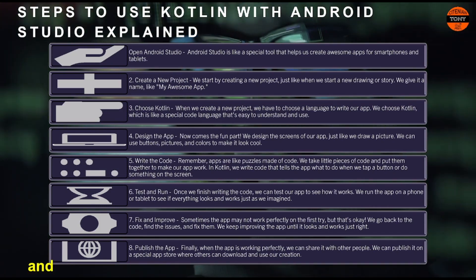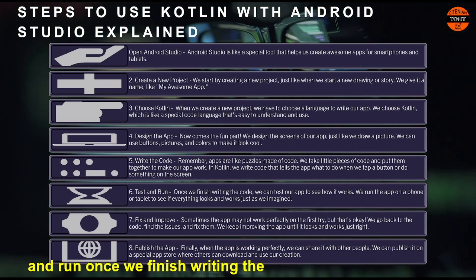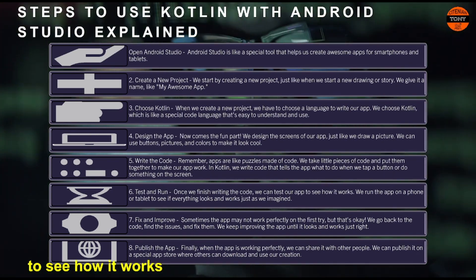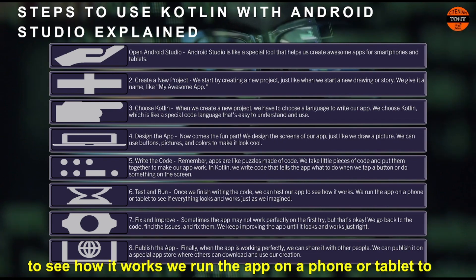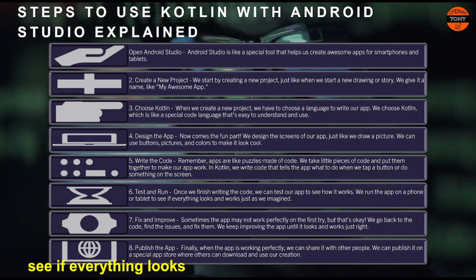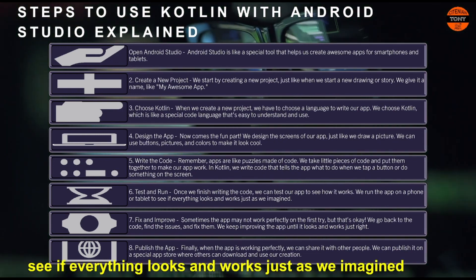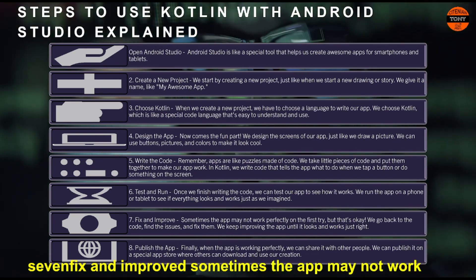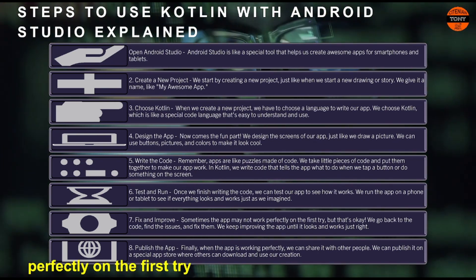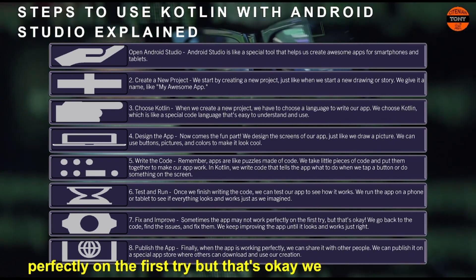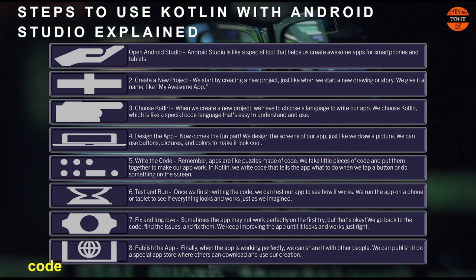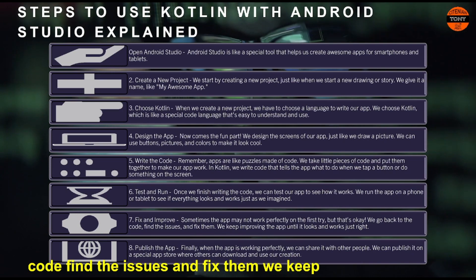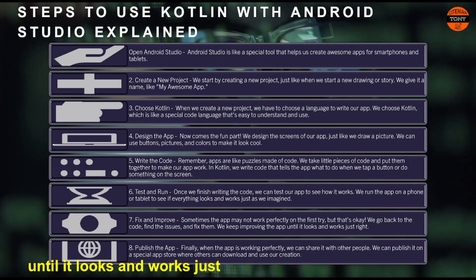Step 6: Test and run. Once we finish writing the code, we can test our app to see how it works. We run the app on a phone or tablet to see if everything looks and works just as we imagined. Step 7: Fix and improve. Sometimes the app may not work perfectly on the first try, but that's okay. We go back to the code, find the issues, and fix them. We keep improving the app until it looks and works just right.